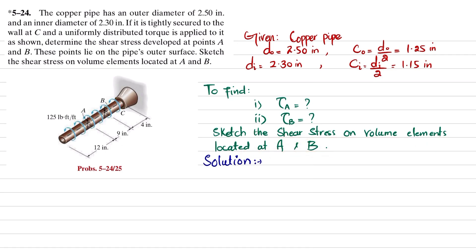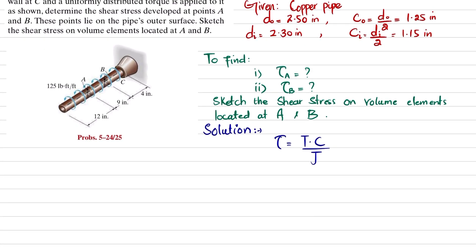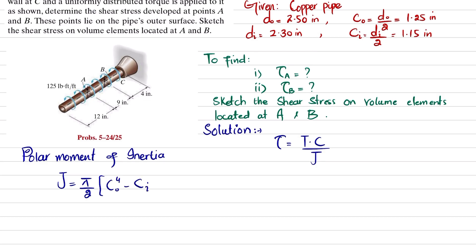Shear stress is equal to torque times c divided by J, where J is the polar moment of inertia. The polar moment of inertia is J = (π/2)(c_outer⁴ − c_inner⁴). Since outer diameter is 2.50 inches and inner diameter is 2.30 inches, the outer radius is 1.25 inches and the inner radius is 1.15 inches. Substituting: J = (π/2)(1.25⁴ − 1.15⁴).